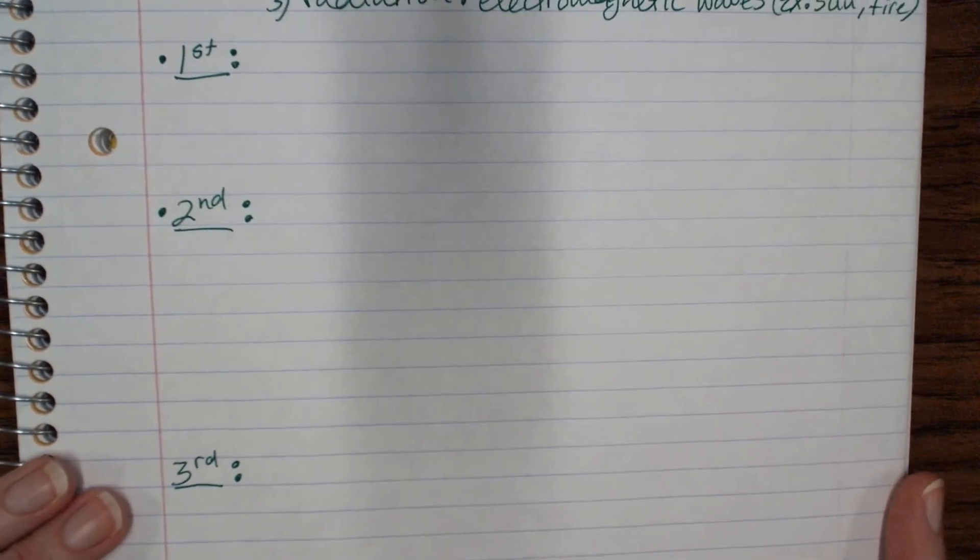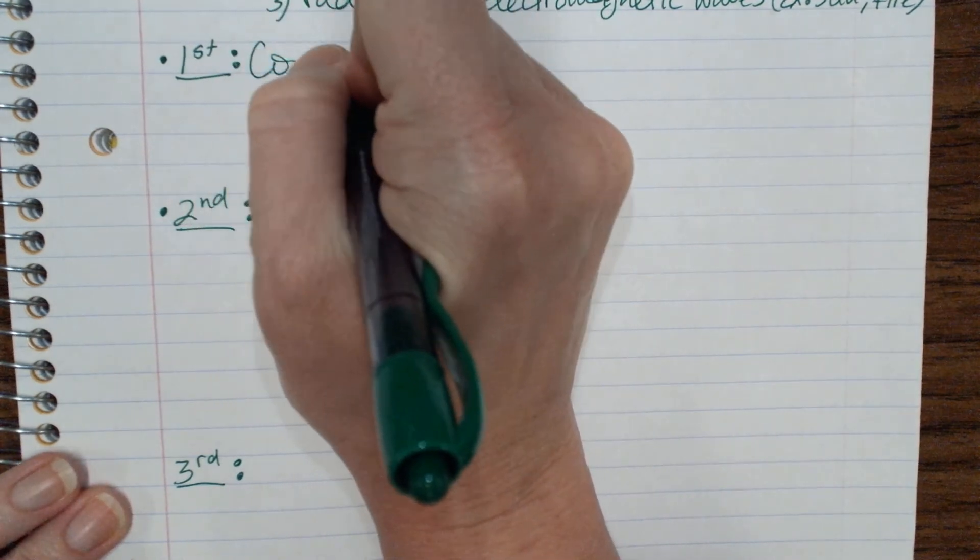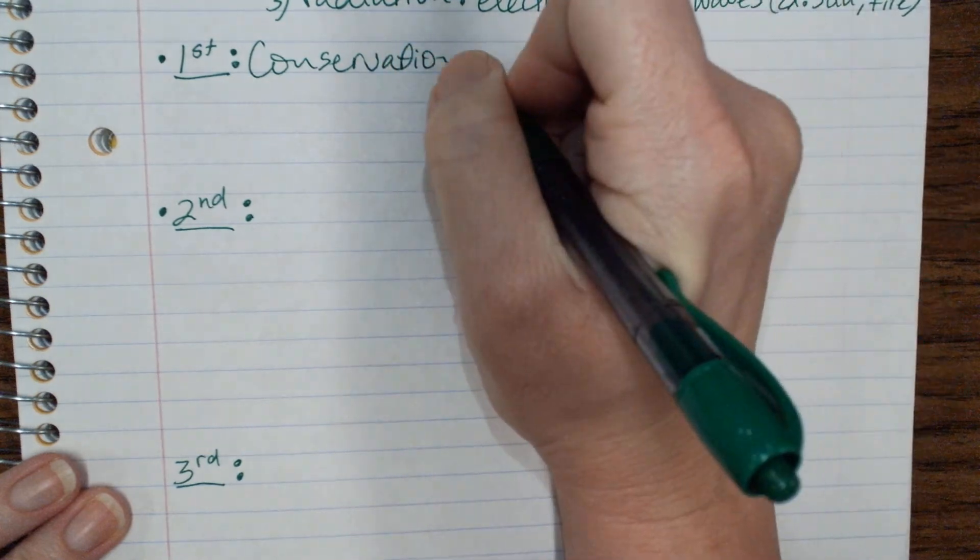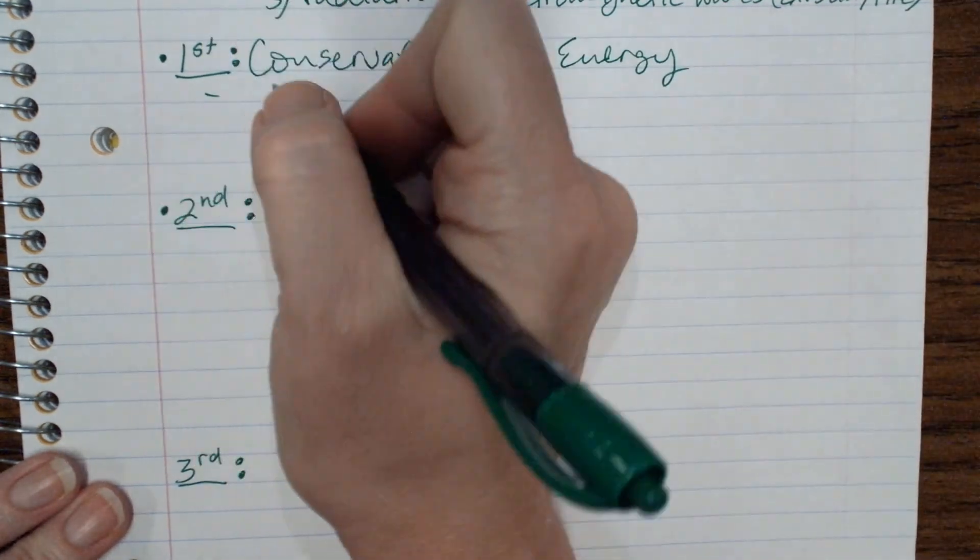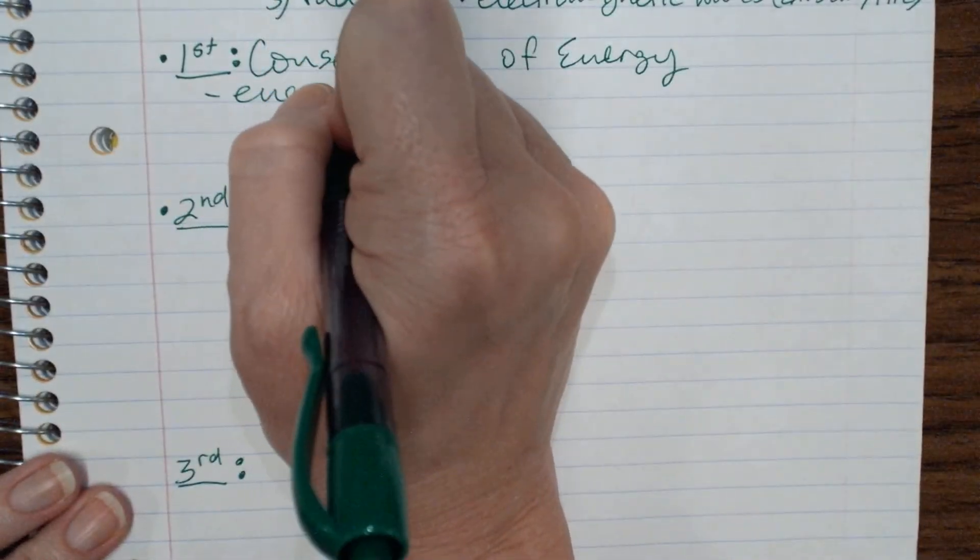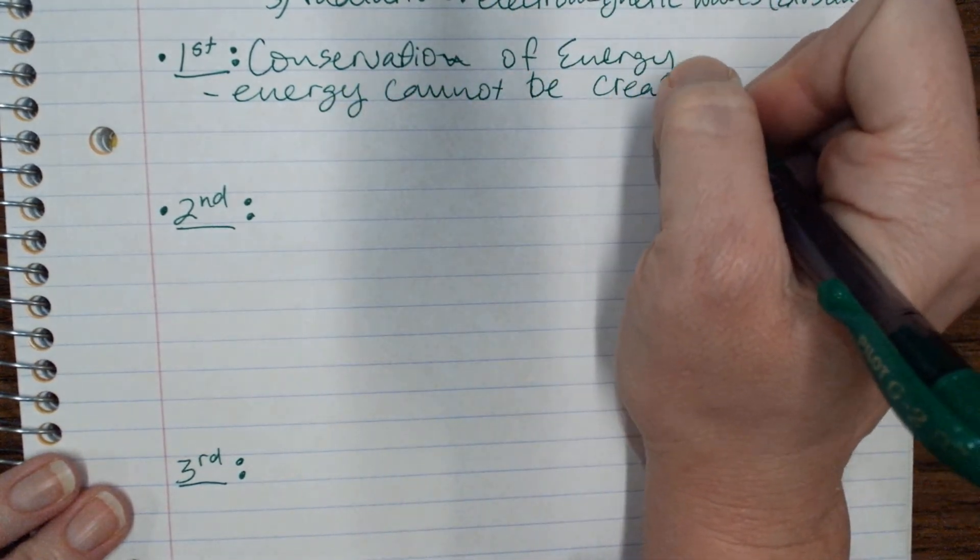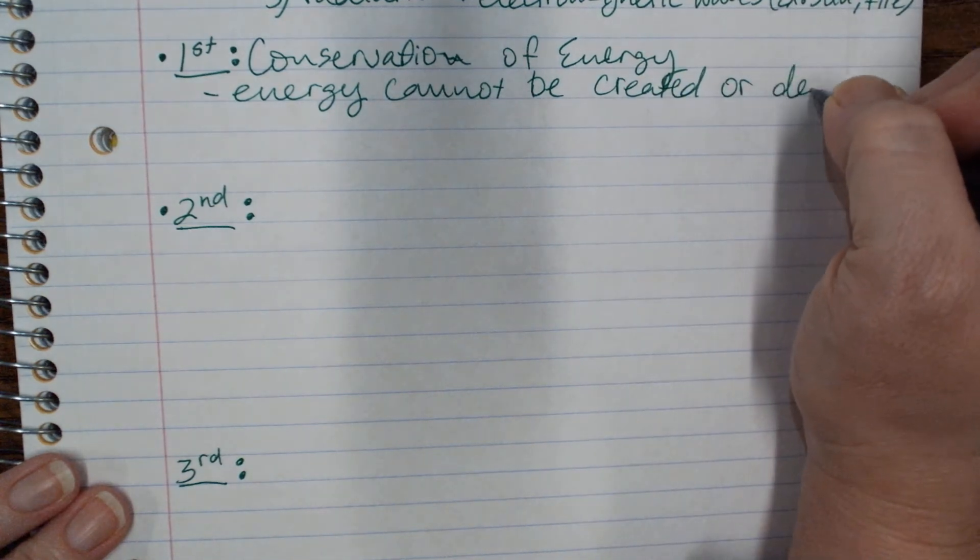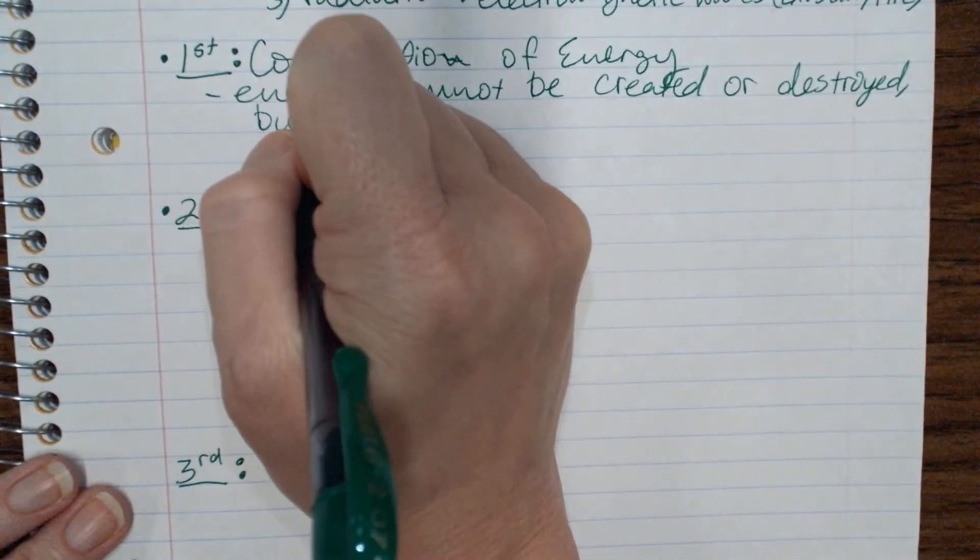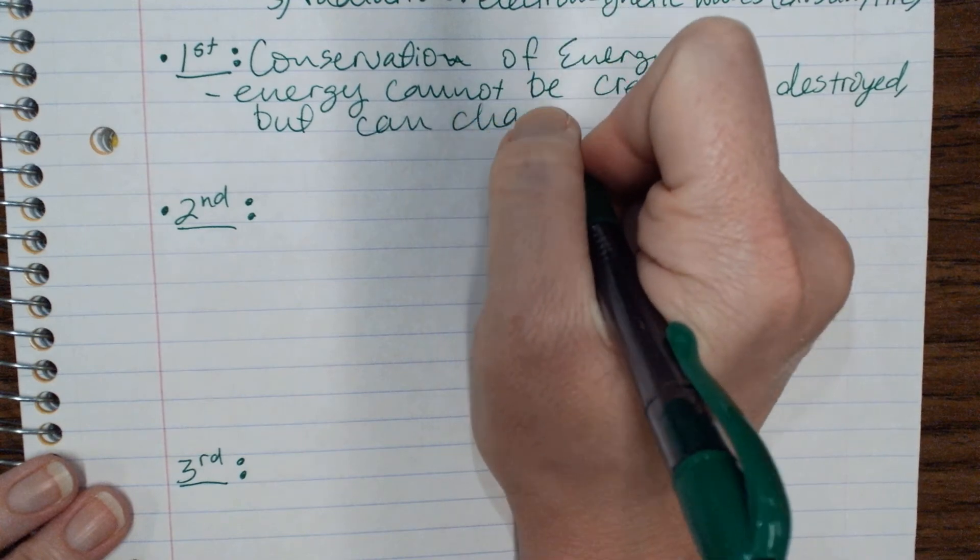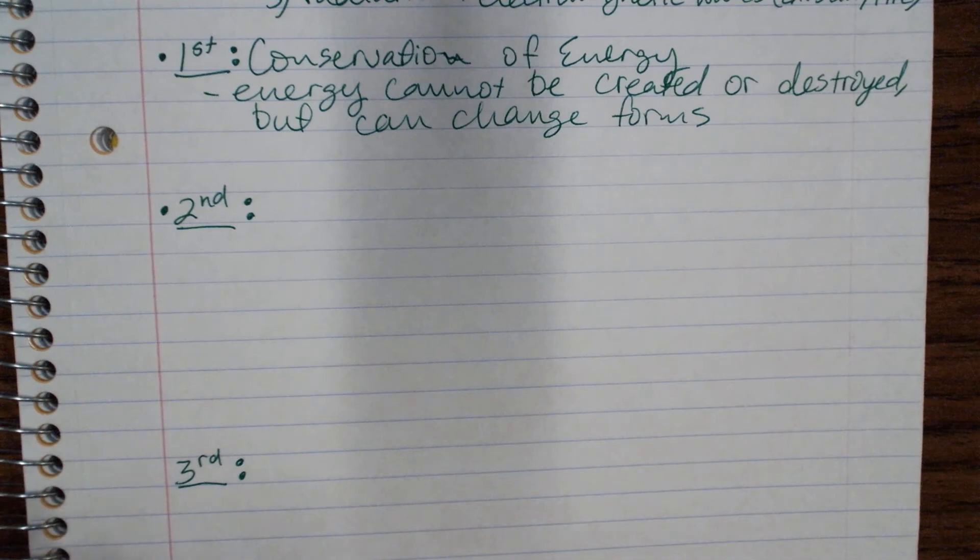And then we have the first law. First law is the law of conservation of energy. So this one's simple. You've already heard it. Energy cannot be created or destroyed but can change forms. That's all.